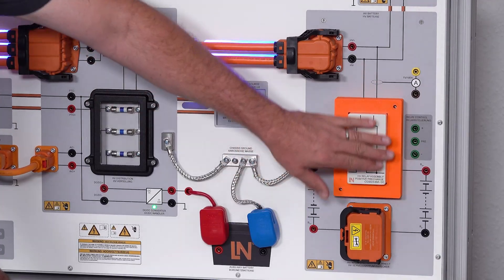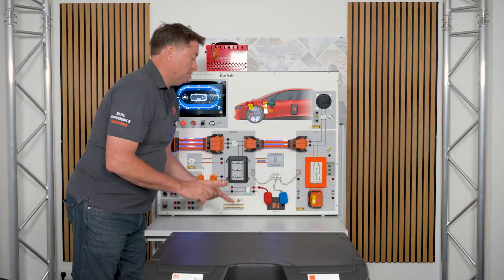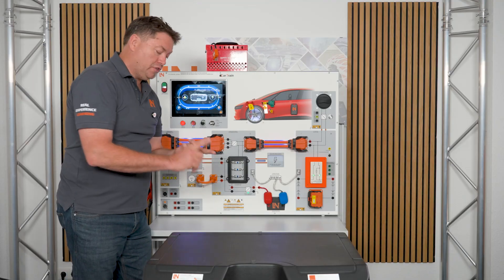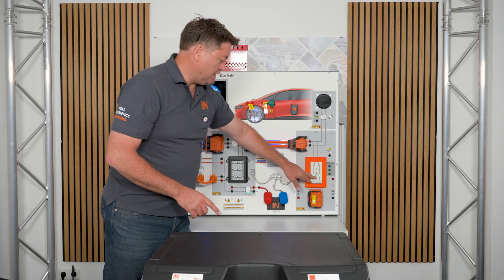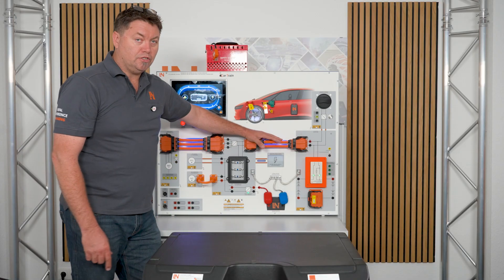Above that is our high voltage relay assembly. This has many different names: contactors, system main relays. But these are the relays that are switching the battery through to the rest of the vehicle.